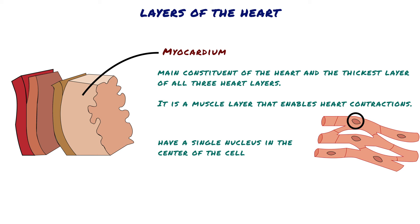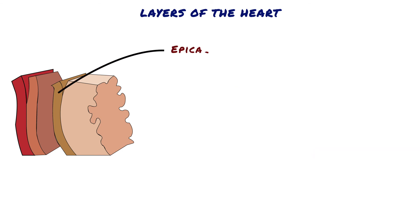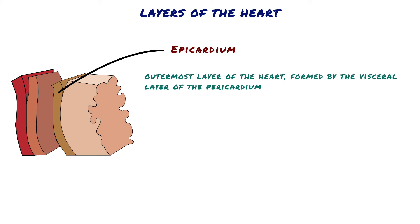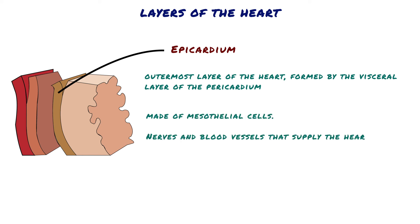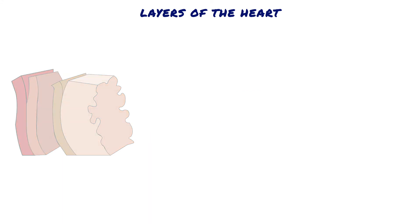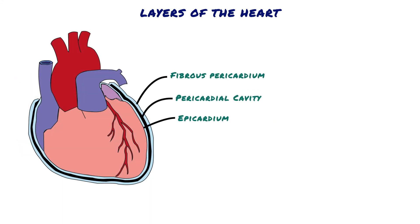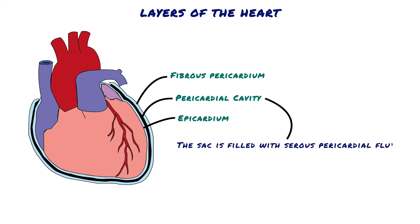The subepicardial layer lies between the myocardium and the epicardium. Epicardium. The epicardium is the outermost layer of the heart, formed by the visceral layer of the pericardium. Histologically, it is made of mesothelial cells. Nerves and blood vessels that supply the heart are found in the epicardium. At the roots of great vessels, the epicardium reflects back and continues as the parietal pericardium, forming an enclosed pericardial sac. The sac is filled with serous pericardial fluid that prevents friction during heart contractions.